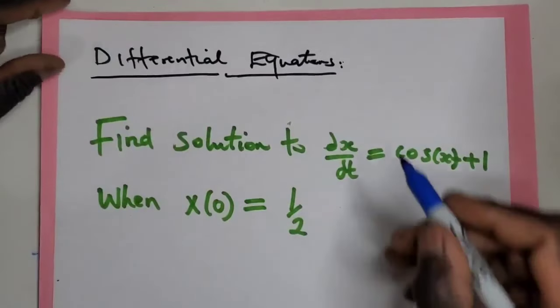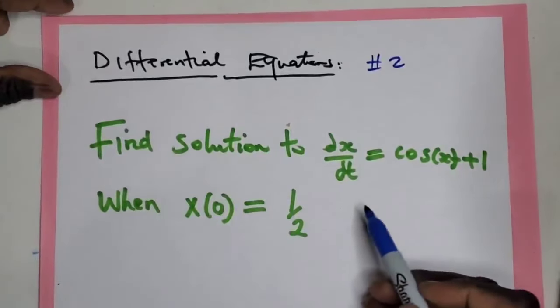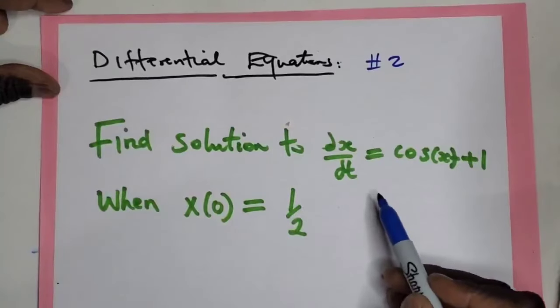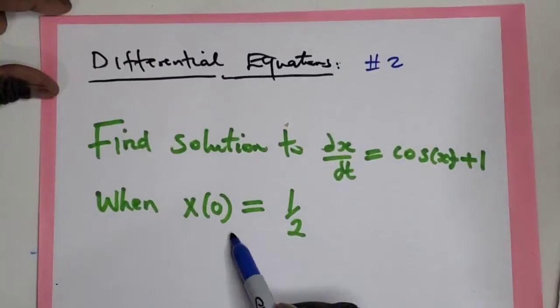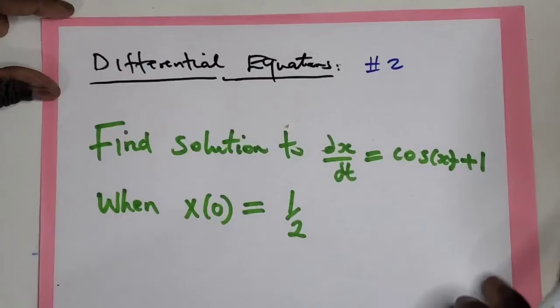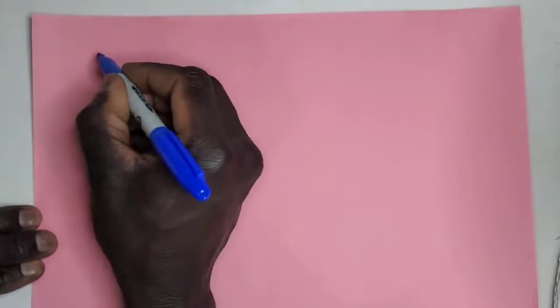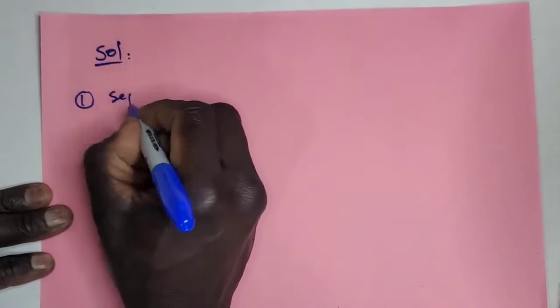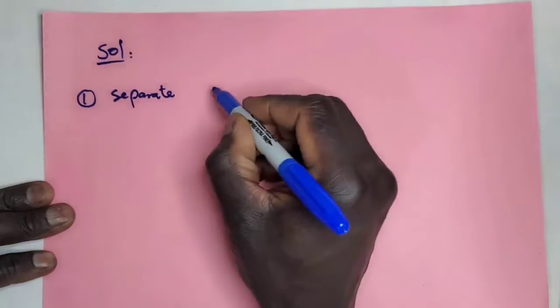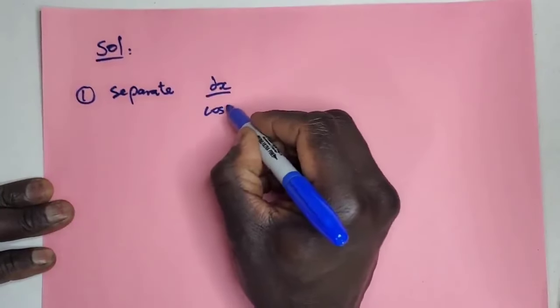Let's do example 2. Find solution to dx/dt = cos(x) + 1 when x(0) = 1/2. Solution: Number one, you separate, so that is dx/(cos x + 1) = dt.